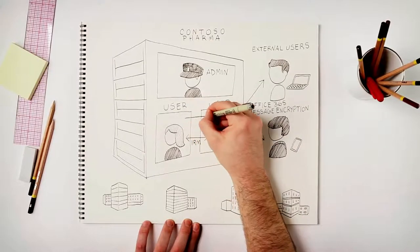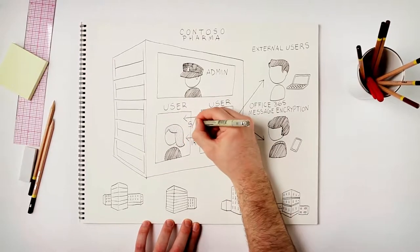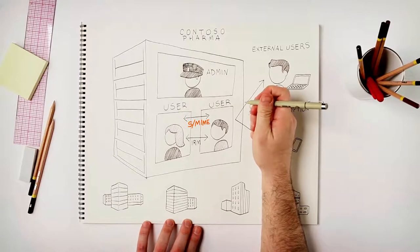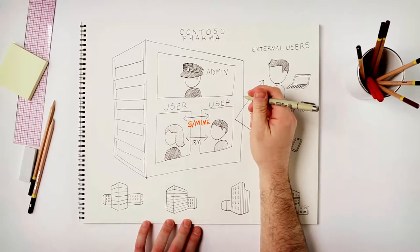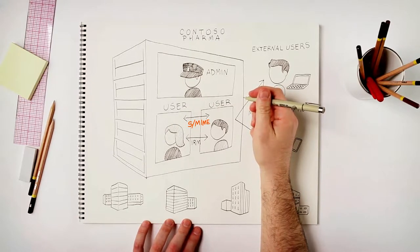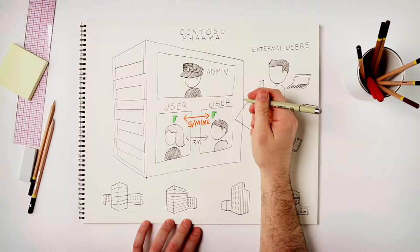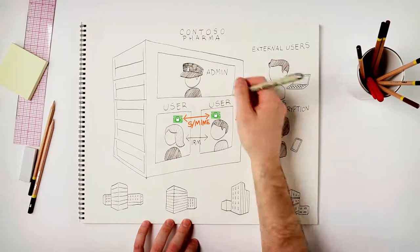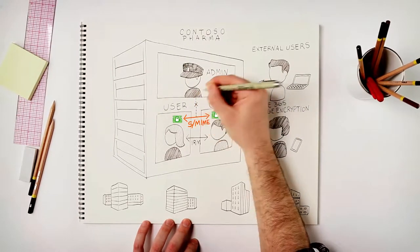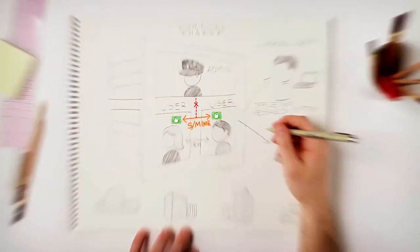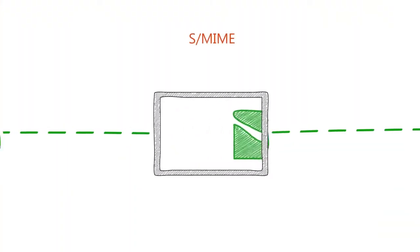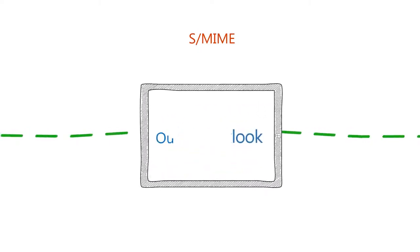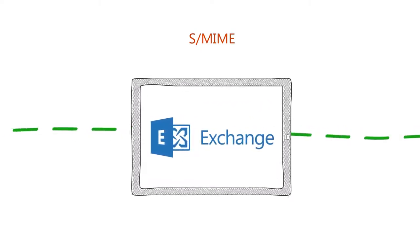Complementing IRM and Office 365 Message Encryption is S/MIME, the third encryption control in Office 365. S/MIME is a peer-to-peer encryption solution where communication is encrypted peer-to-peer, so no one in the middle can view it — not even your administrator. You can easily send and receive S/MIME messages from Outlook, Outlook Web App, or EAS clients.